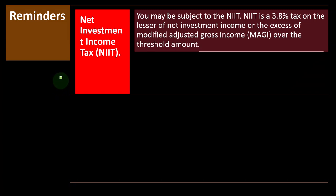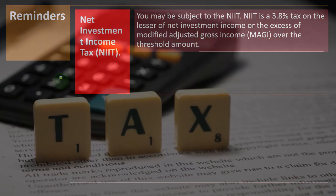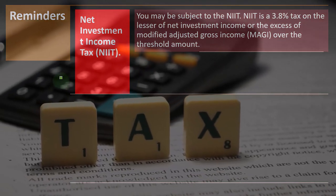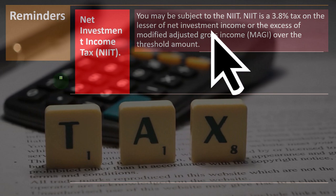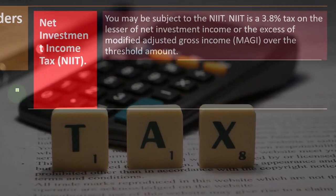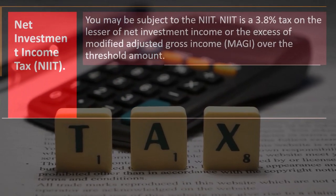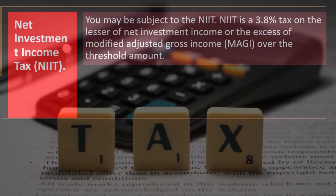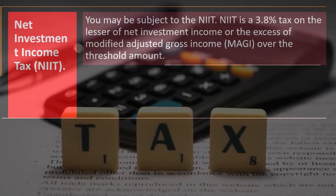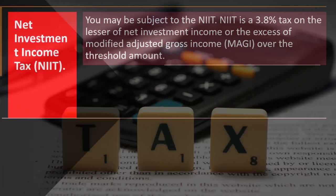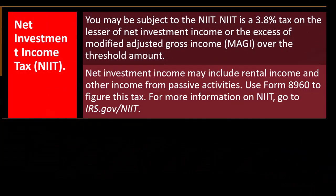Reminders: Net Investment Income Tax (NIIT). You may be subject to the NIIT — a 3.8% tax on the lesser of net investment income or the excess of modified adjusted gross income (MAGI) over the threshold amount. Net investment income may include rental income and other income from passive activities.